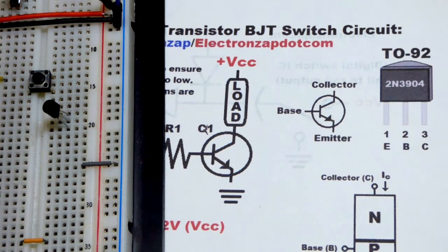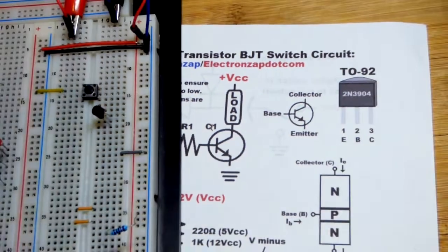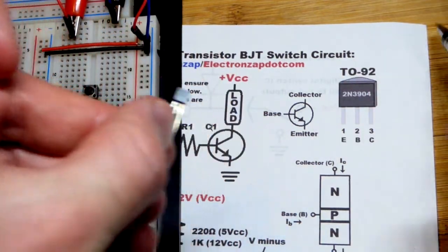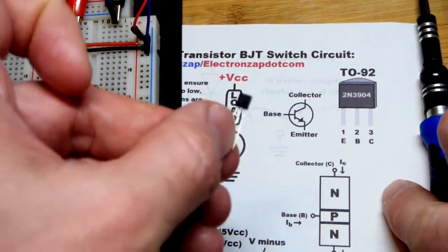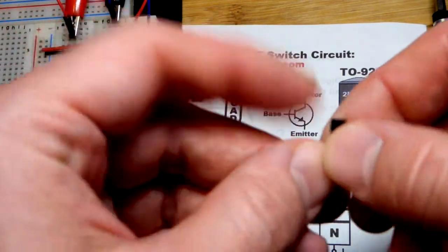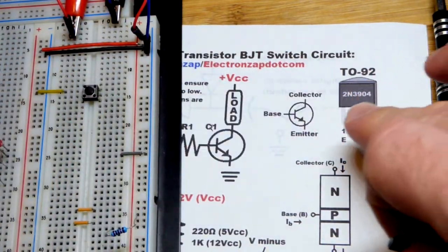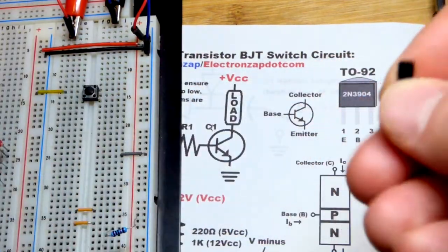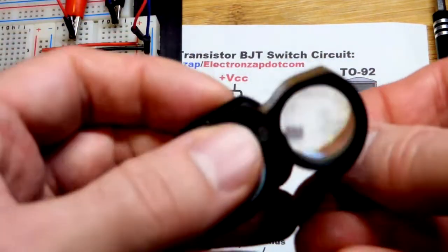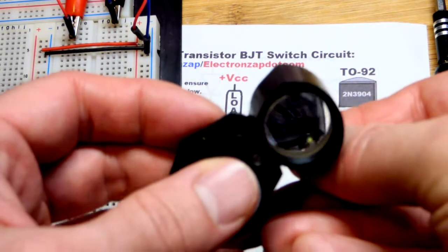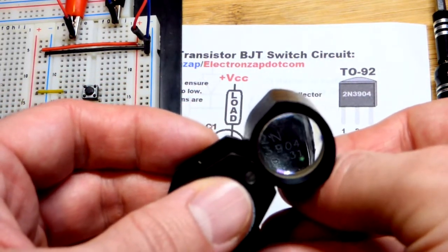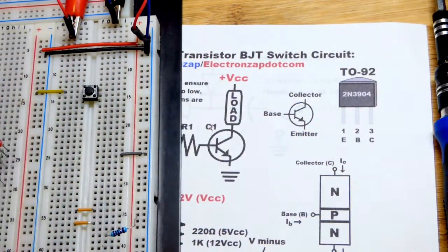We're using the TO92 package 2N3904. TO92 just means it looks like this, it has this appearance. There's a lot of components that have this appearance, and you've got to look at the part number to know the pin layout. Let's see if we can see the part number. 2N3904, not too bad.